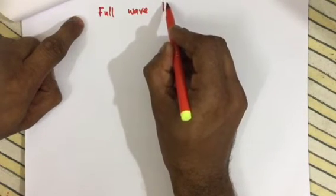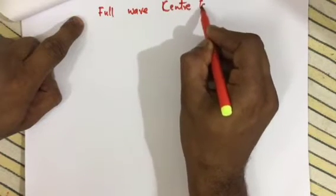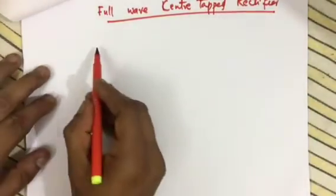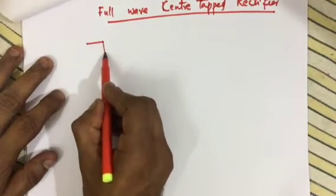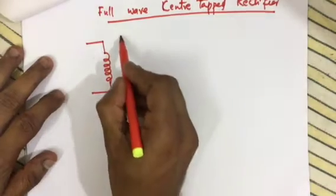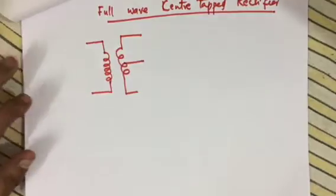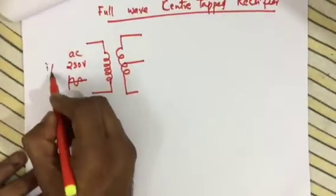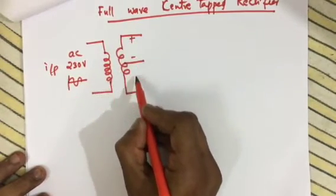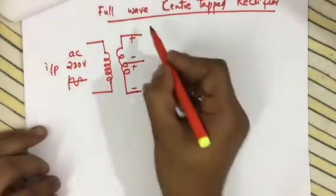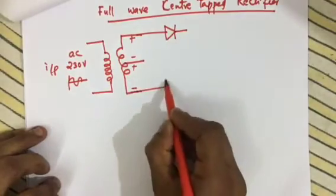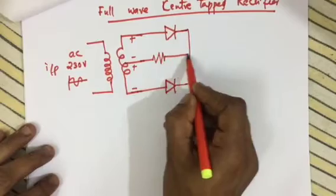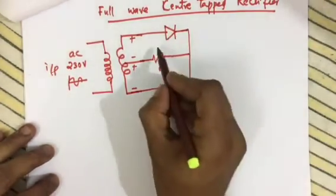Now we will study the full wave centre tap rectifier. The main difference here is the transformer — we use a centre tap transformer, which has a tap from the centre of the secondary winding. We have 230 volt AC input on the primary. Two diodes D1 and D2 are connected in the same direction, and a load resistor RL is connected. The output voltage is always taken across the load resistor.